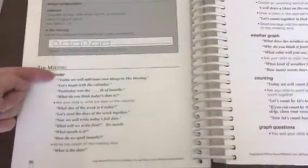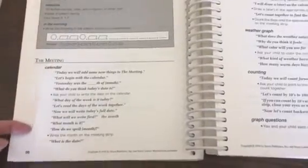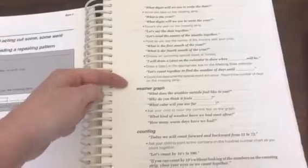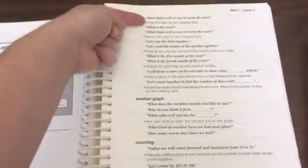Then it goes into a meeting that's the first thing you're going to do every day. That is with your calendar book. It tells you exactly what to say. Everything in bold is exactly what you should say and the non-bold writing is what you should do. It has a weather graph and then counting.